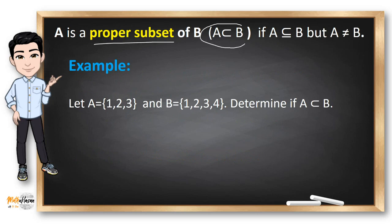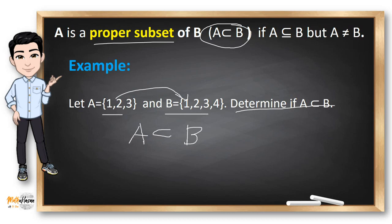Use this symbol if you want to refer to the proper subset. Now, let A be the set containing 1, 2, 3 and B be the set containing 1, 2, 3, 4. Determine if A is a proper subset of B. Can we say that A is a proper subset of B? The answer is yes, because all the elements of A are in B and A is not equal to B.